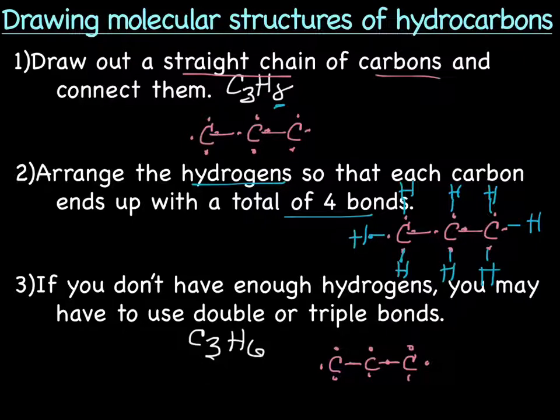So what you need to do is let's put in our six hydrogens. So we have one hydrogen, two hydrogens, three hydrogens, four hydrogens, five hydrogens, and we need to stick in one more, six hydrogens. So we have our six hydrogens and we have our three carbons, but we do not have four bonds around each carbon. However, we can connect those two and have a double bond.